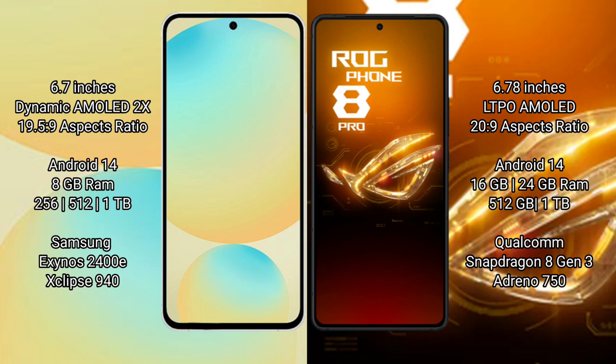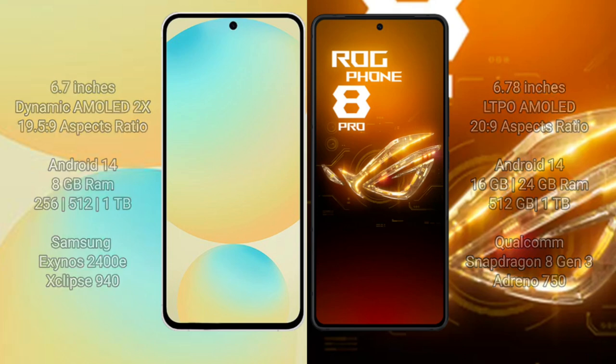Samsung Galaxy S24 FE is powered by the Samsung Exynos 2400E processor with GPU. ASUS ROG Phone 8 Pro comes with 16GB or 24GB RAM and 512GB or 1TB internal storage, powered by the Qualcomm Snapdragon 8 Gen 3 processor with Adreno GPU.